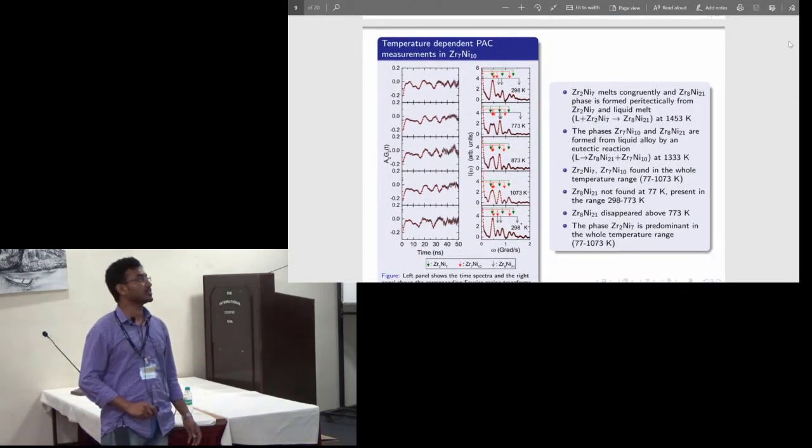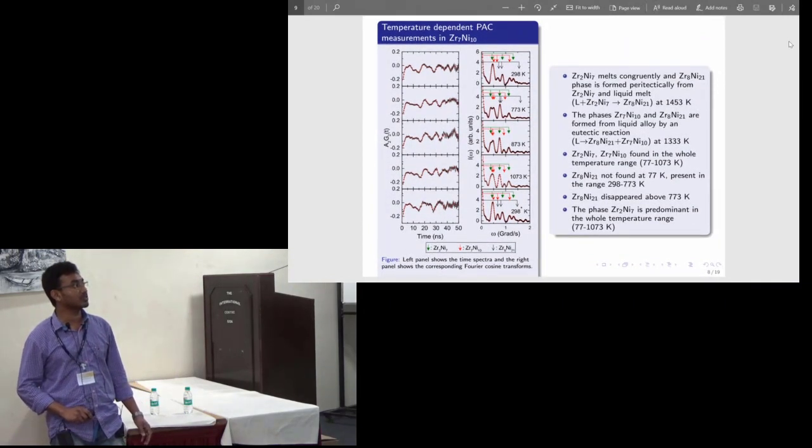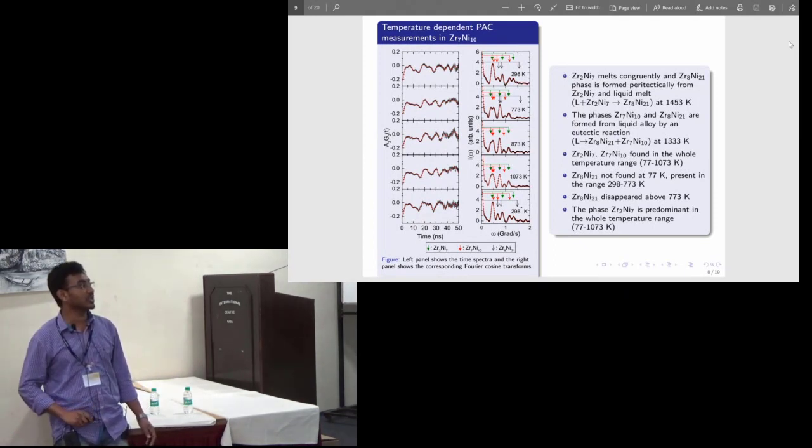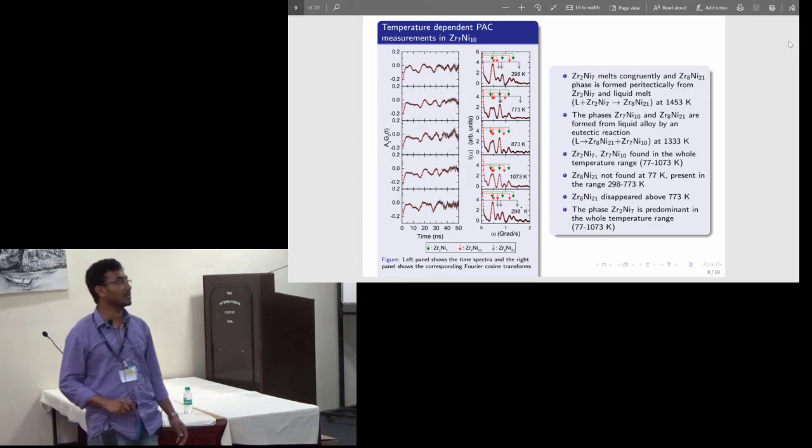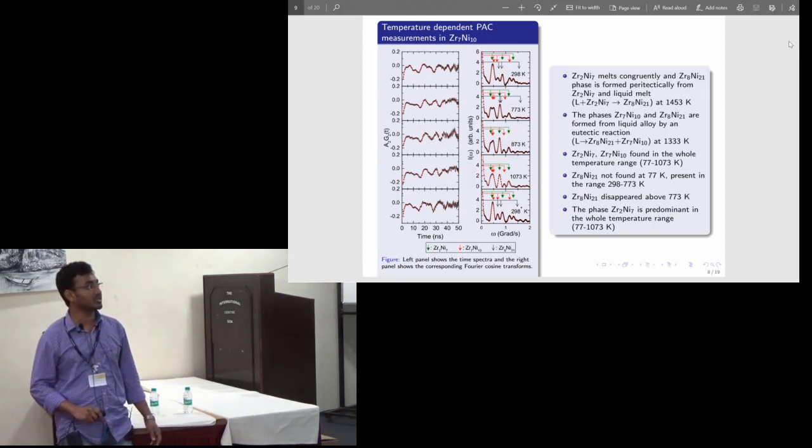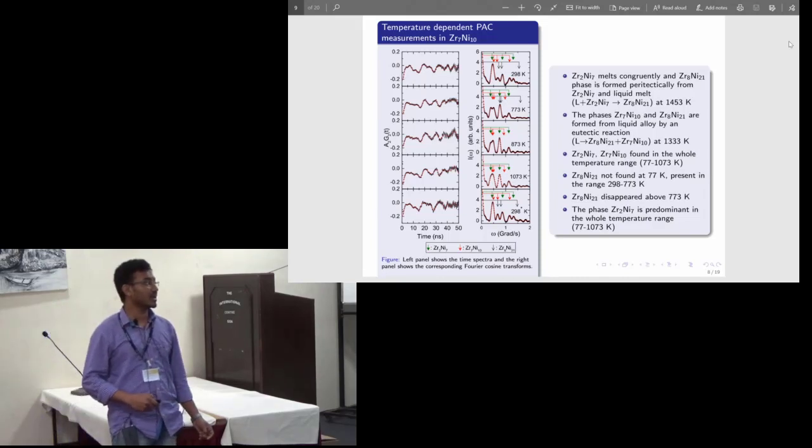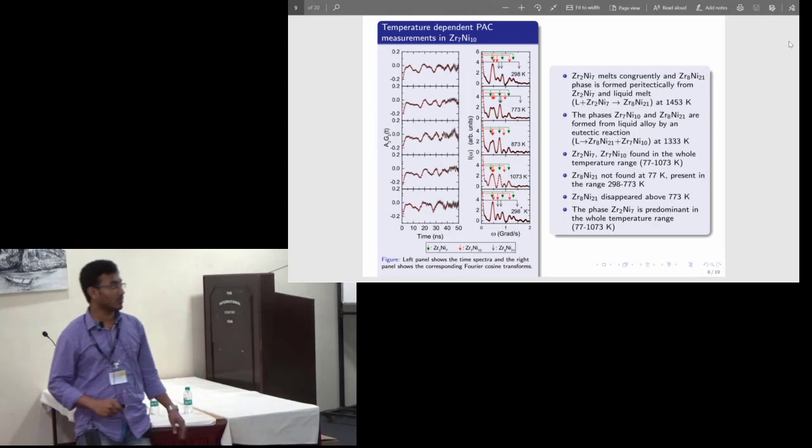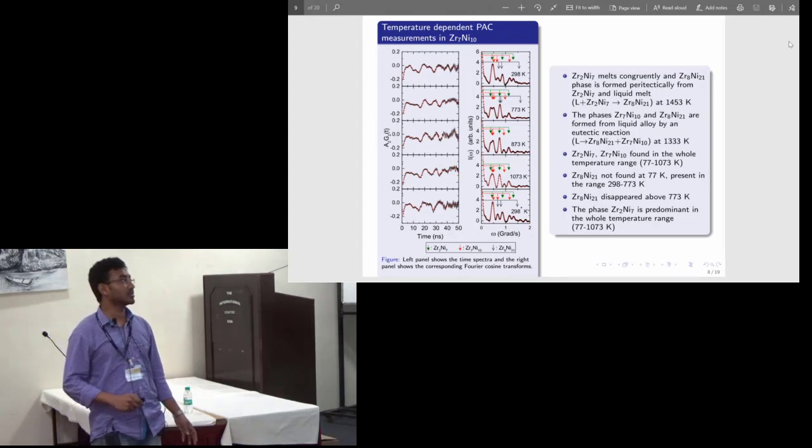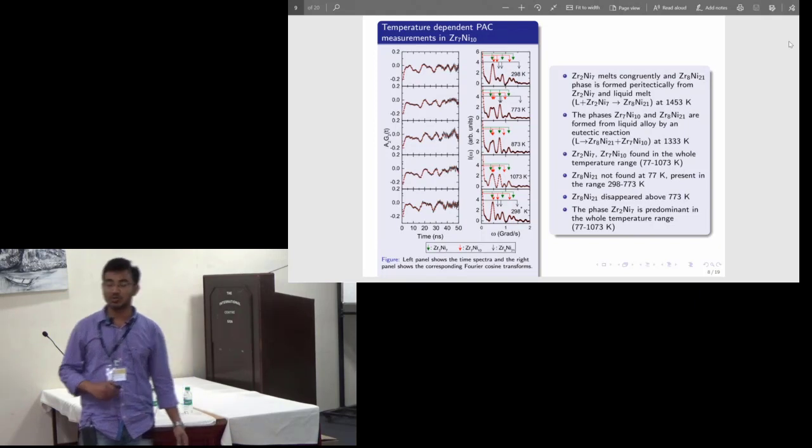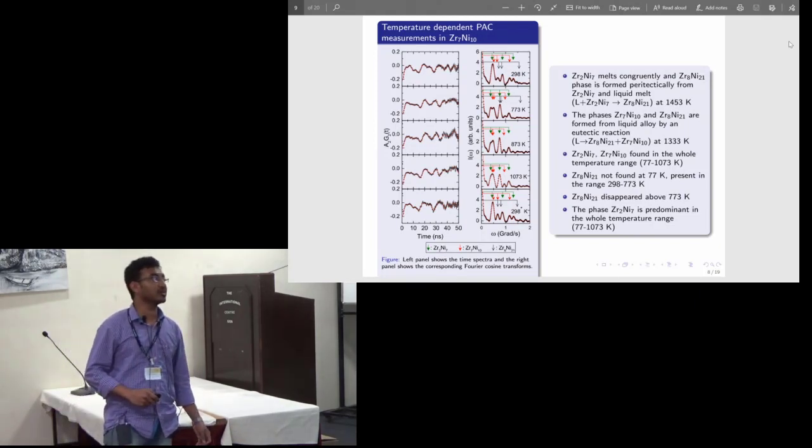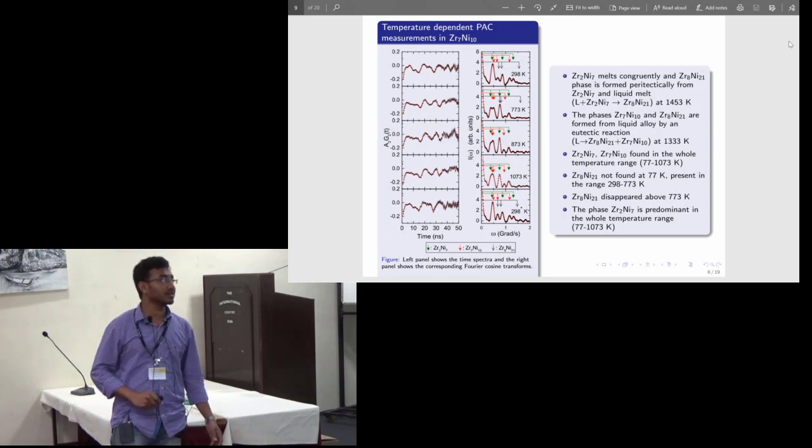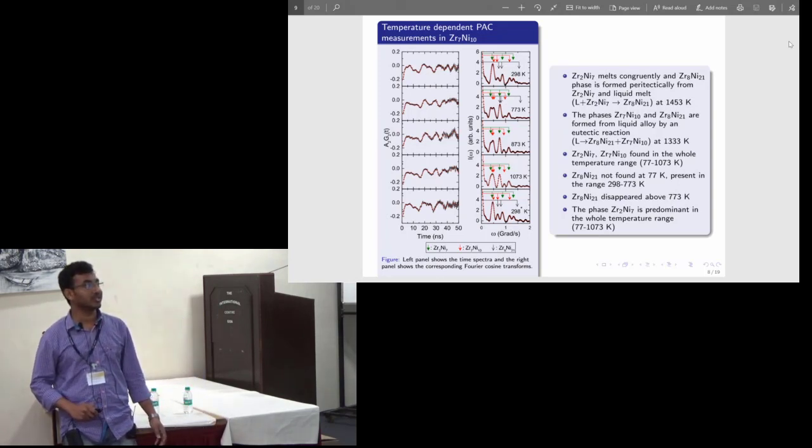This is our temperature dependent PAC spectrum. The set of 3 arrows shows the transition frequencies for a particular phase. Up to 773 K we have found these three phases, and after 773 K the Zr8Ni21 component disappears. But when we remeasured the PAC at room temperature after measurement at 1073 K, the component Zr8Ni21 again reappeared. Now, why these other secondary phases came? The Zr2Ni7 actually is a congruently melting phase. It is fast solidified from the liquid and it reacts with the remaining liquid to form peritectically the Zr8Ni21 at 1453 K, and the remaining liquid eutectically decomposes to Zr7Ni10 and Zr8Ni21.